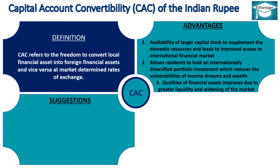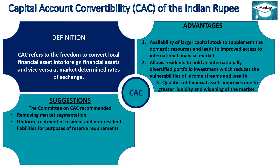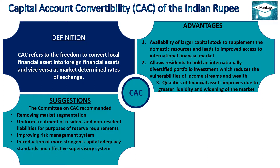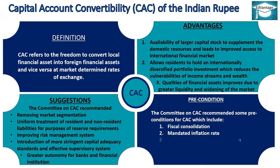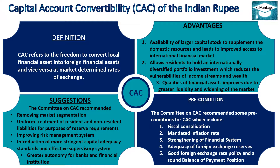Suggestions — The Committee on CAC recommended: removing market segmentation, uniform treatment of resident and non-resident liabilities for purposes of reserve requirements, improving a risk management system, introduction of more stringent capital adequacy standards and effective supervisory system, and greater autonomy for banks and financial institutions. Preconditions recommended by the Committee on CAC include: fiscal consolidation, mandated inflation rate, strengthening of the financial system, adequacy of foreign exchange reserves, and good foreign exchange rate policy with a sound balance of payment position.